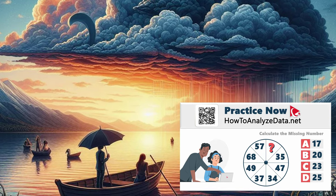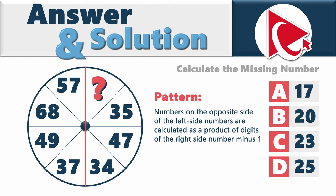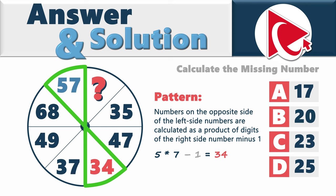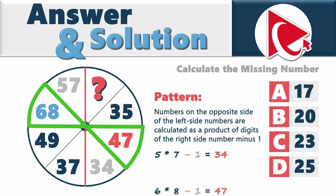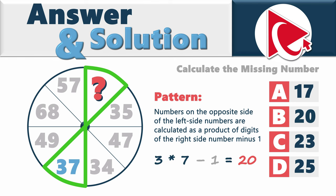If you look closely at the circle, you can recognize the pattern. The numbers on the opposite side are calculated as the product of digits of the right-side numbers minus 1. For example: 5×7−1=34, 6×8−1=47, 4×9−1=35. Now for the missing number: 3×7−1=20. So the correct answer is Choice B, 20.